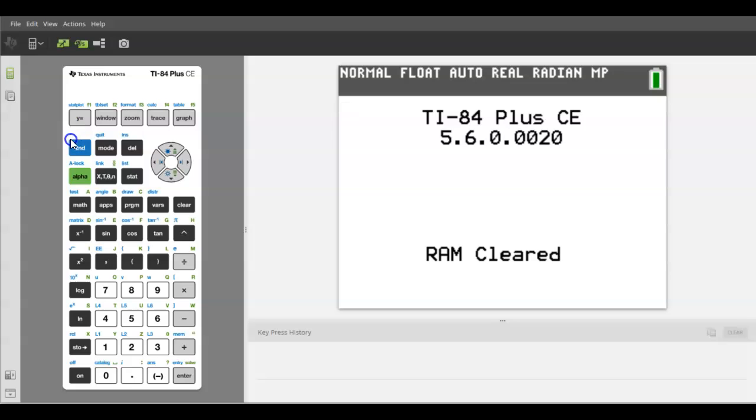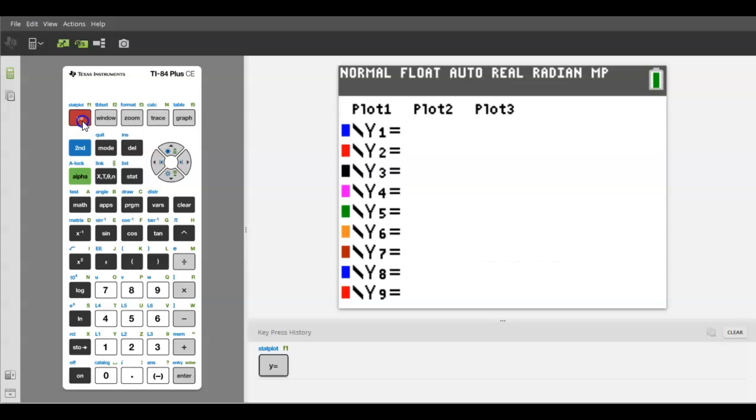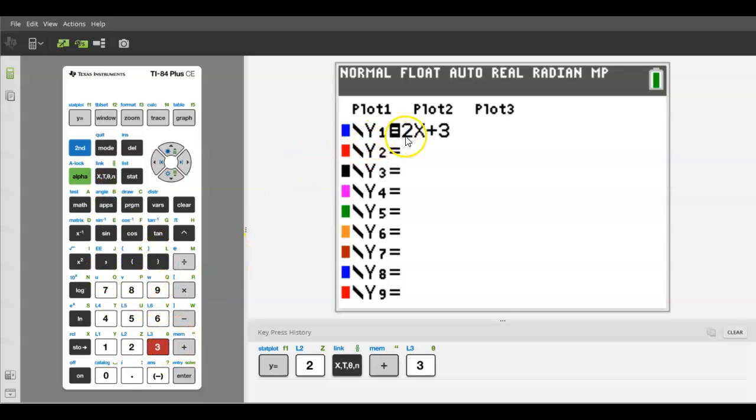The graphing calculator is menu based, so when you push different buttons it shows you different menus. This row up here are your graphing buttons. Y equals is your function editor, so I can type in 2x plus 3, and this is y equals 2x plus 3. Notice I used this button down here for my variable.